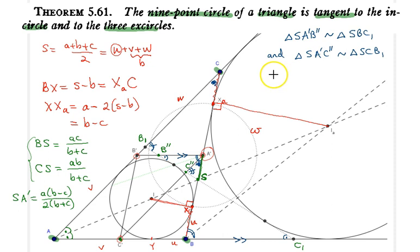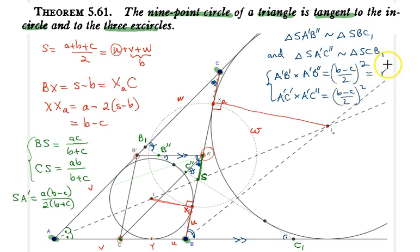And using these two similarities we can conclude that A prime B prime times A prime B double prime is nothing but B minus C over 2 squared, and also A prime C prime times A prime C double prime is equal to the same length. But notice that this is just the radius of our inversion circle. We already established that XX_A is equal to B minus C, so therefore the radius is nothing but B minus C over 2.